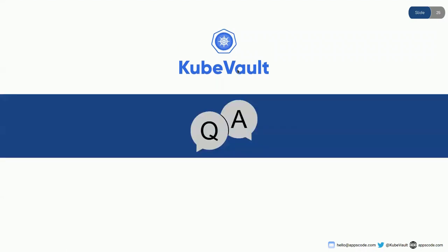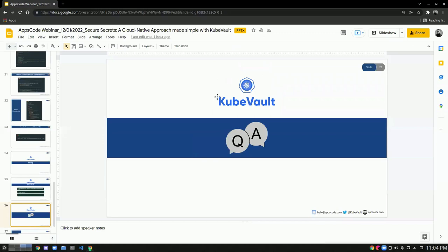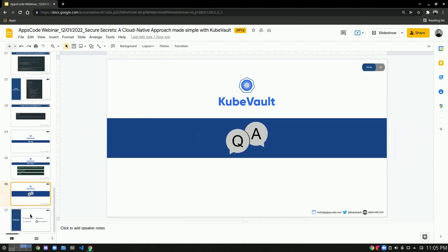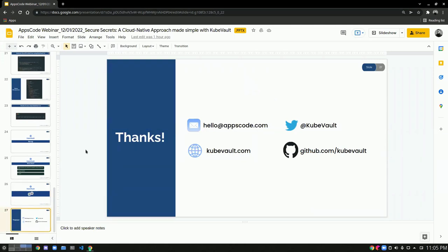That was all from my side for this demo. If you have any questions, feel free to unmute yourself and ask them. I see no questions in the Zoom chat. So if no one has any questions, thanks for joining. You can communicate with us at hello@appscode.com and tweet us at QVault. You can also visit our website at qvault.com for documentation and installation. You can also connect with us on GitHub at github.com/qvault.